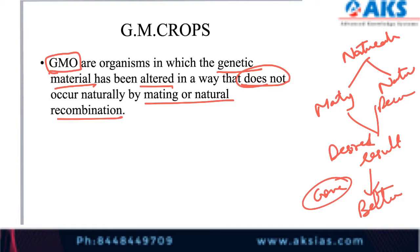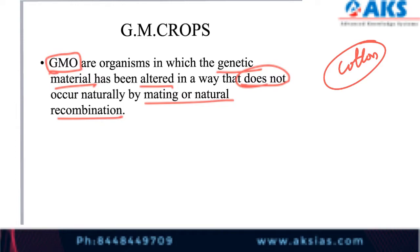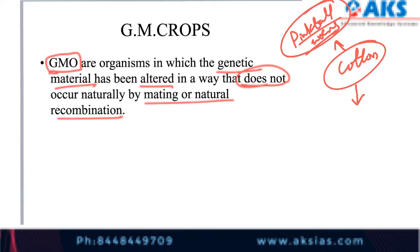Let us understand with the example of cotton. Cotton is generally infected by a lot of pests. One of the most significant is the pink bollworm, which affects the crop very quickly. So it was necessary to invent something to protect against pink bollworms and get the cotton produced. Thus, Bt cotton was introduced.